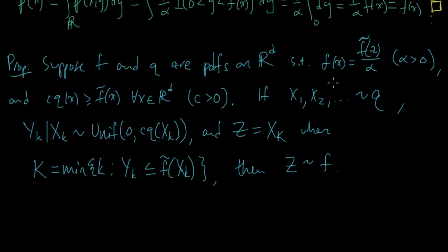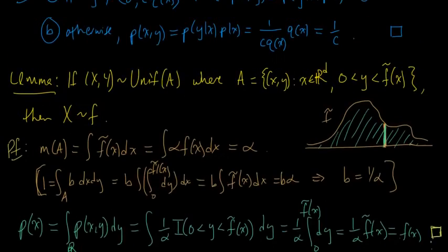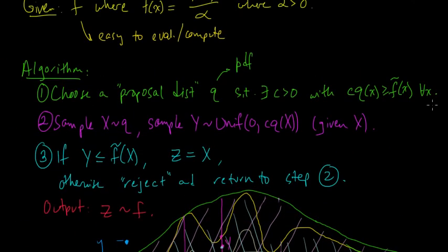Before, this was kind of implicit in the algorithm that we were, there was some infinite sequence we could possibly draw from. And the Y's were conditionally uniform on that interval. And then we are rejecting each one until we get to capital K.